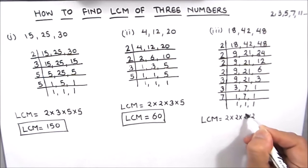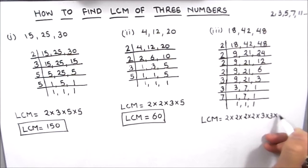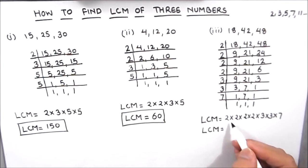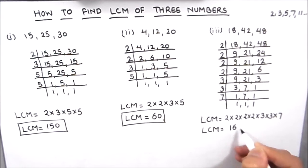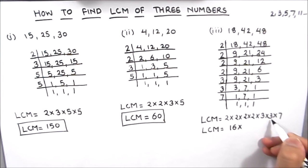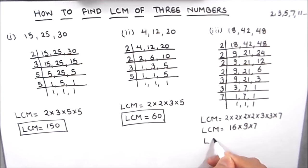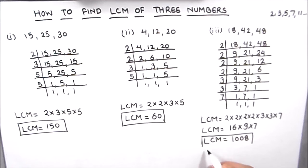So 2 times 2 times 2 times 2 times 3 times 3 times 7 is the LCM of the three numbers. So 2 times 2 is 4, 4 times 2 is 8, 8 times 2 is 16, 16 times 9 is 144, times 7 is 1008. So the LCM of the three numbers is 1008.